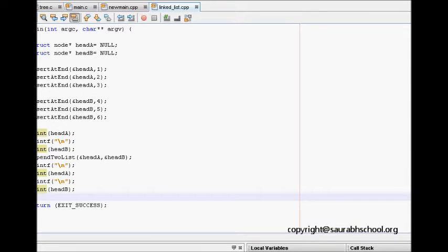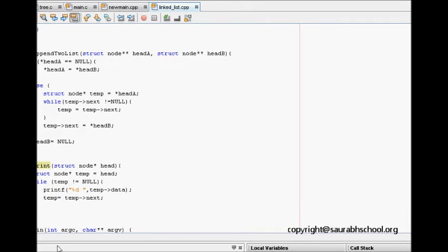So we come to the code part and we see that, let's see the function. So append to list we see here, and we have struct node star star head A, struct node star star head B.